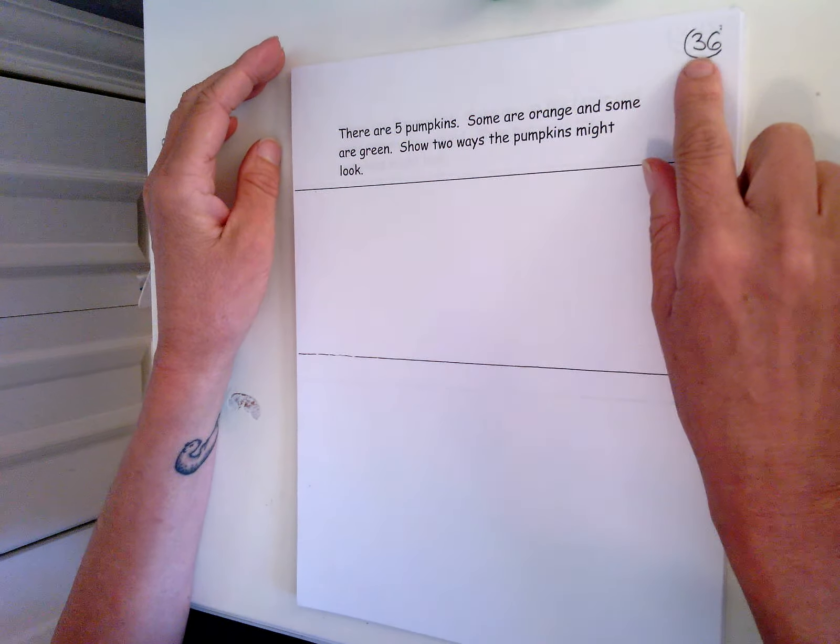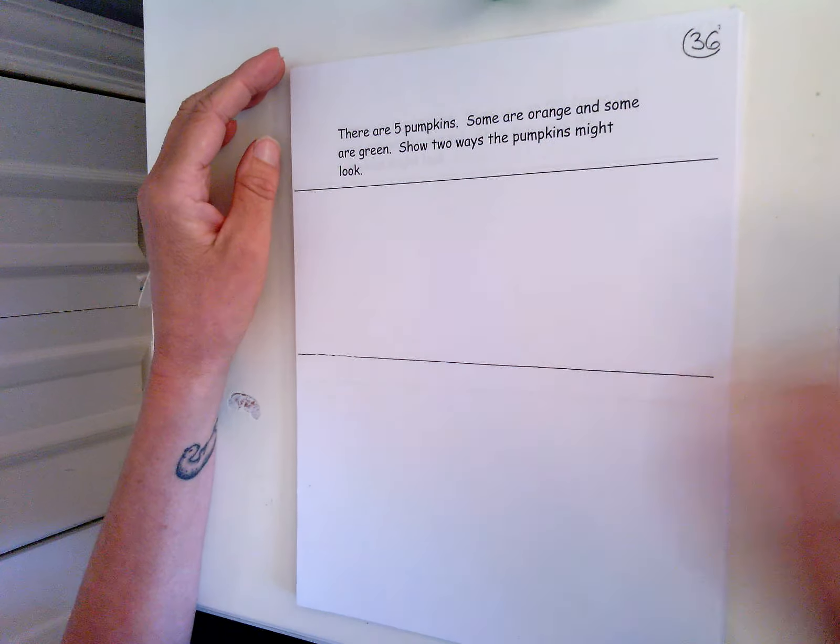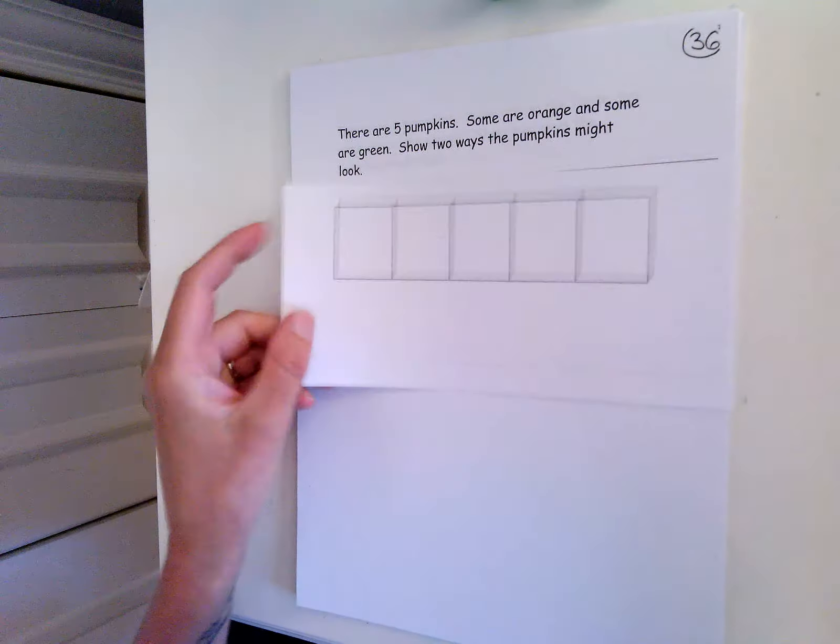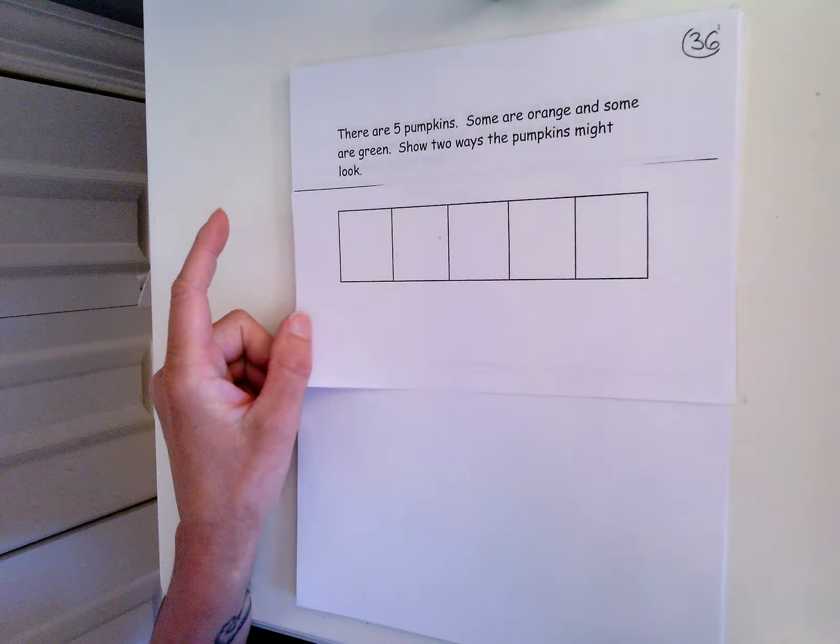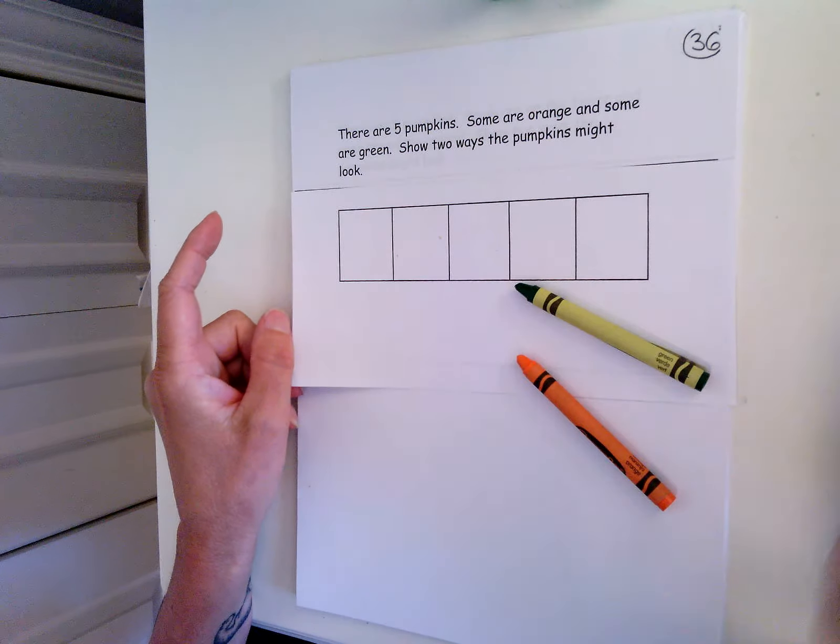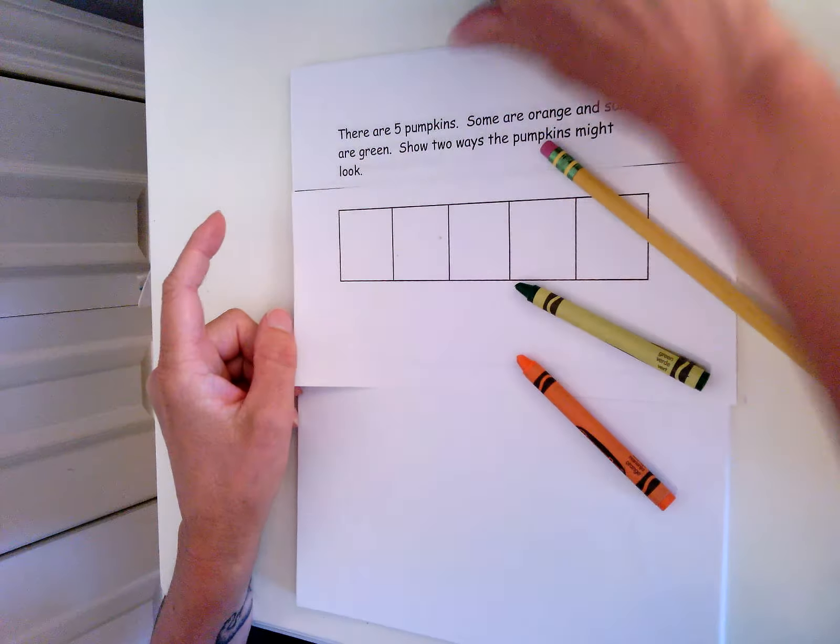So you need your math journal, page 36. You will need your fives frame, crayons, preferably green and orange, a pencil, and some counters.